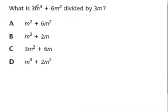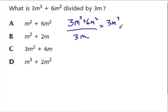What is 3m to the third plus 6m squared divided by 3m? Same problem, but they're not writing it out for us. So I'm going to write it out. 3m to the third power plus 6m squared over, divided by 3m. Well, that equals 3m to the third power over 3m plus 6m squared over 3m.